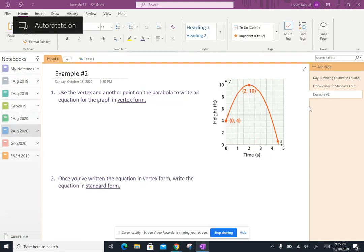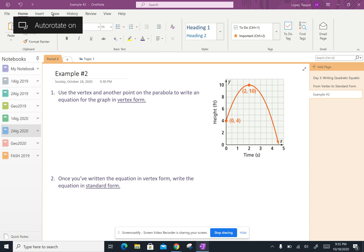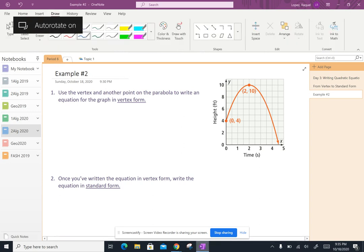This example is a lot like the last example that we did together. So the first thing I want to do is pick out my vertex. I can see my vertex is on the parabola and it's already labeled for me. It's 2 comma 10.